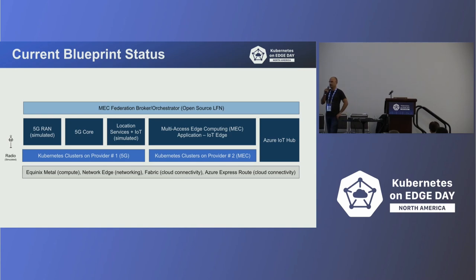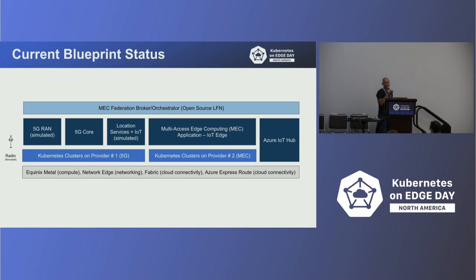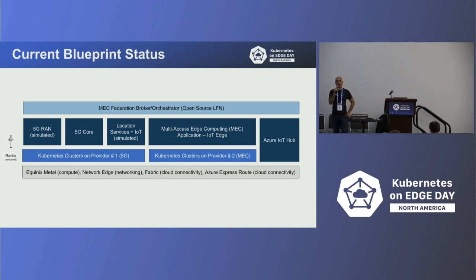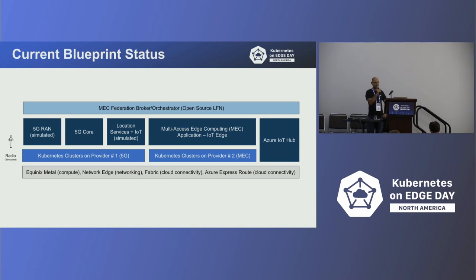This blueprint has been progressing for almost two years now. This is a logical representation of the blueprint, and I'll get into more details and show the physical structure. We have two edge sites — cloud edge sites — and one public cloud site. The physical infrastructure consists of Equinix Metal, which is bare metal as a service; Equinix Network Edge, which provides firewalls, routers, and load balancers on demand; and Fabric, which is on-demand cloud connectivity. Azure ExpressRoute is the other side of the cloud connectivity on the Azure side. On that infrastructure, two clusters were created.